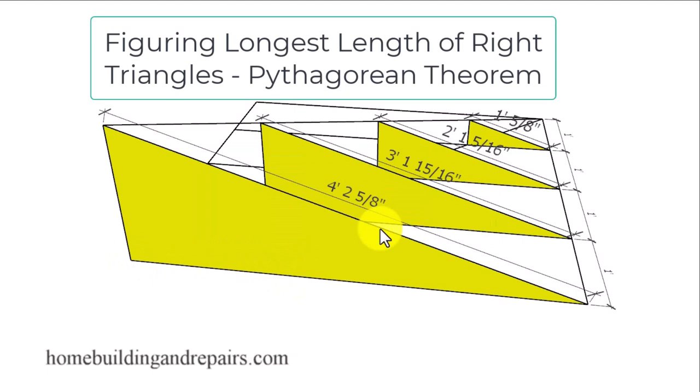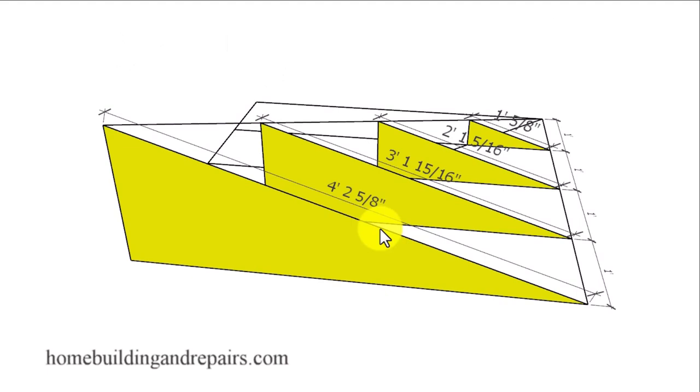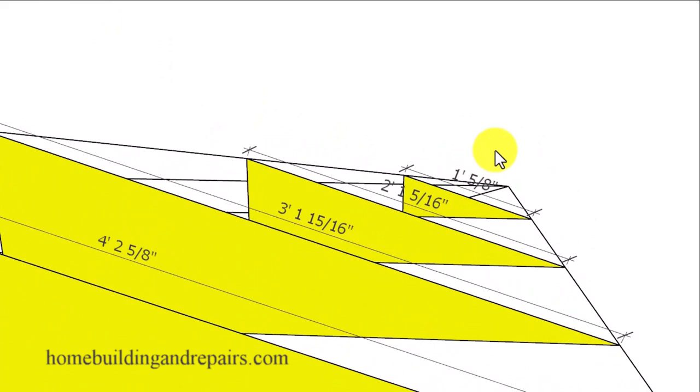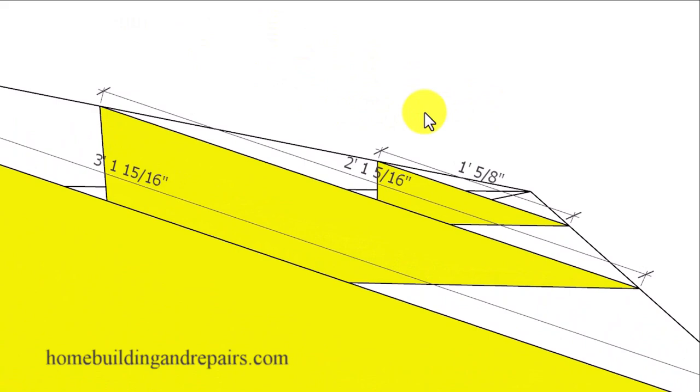I do have another video on that. I will try to put a link in the video description box to that video for those of you who are not familiar with it. Now the length that we are going to arrive at will be 4 foot 2 and 5 eighths inches, or 50.596 as a decimal. And we're going to be using decimals instead of fractions in this video. And the reason for that is that I believe it's a little more accurate. However, you can do whatever you want, whatever's easier for you.